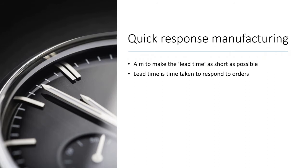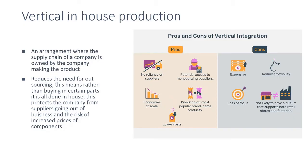Quick response manufacturing (QRM) aims to make lead time as short as possible. Lead time is how long it takes from when you order something to when you receive it — like Amazon Prime, where you order something and it arrives the next day. In modern society we're very impatient. Part of QRM is vertical in-house production: rather than buying in components like bolts, screws, and pins from other companies, a large company produces those parts itself, meaning it's not relying on suppliers who might be out of stock or go out of business.